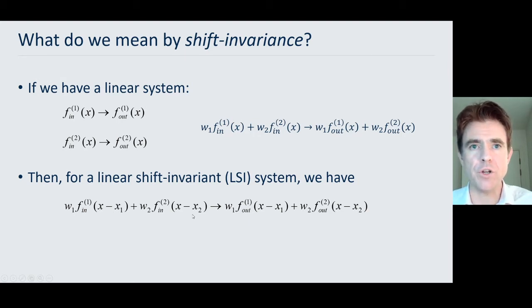Likewise for another input f_in 2 as a function of x, if we shifted that to position x2 and weighted it by a value w2, then at the output we'd get the same weighting factor of f_out 2, where f_out 2 is just the output from when we present the input independently to the system. It's the same output but just also weighted by w2 and also shifted by an amount x2. That's saying it doesn't matter where we shift those inputs to in the field of view of the scanner, we're getting the same output but correspondingly shifted.